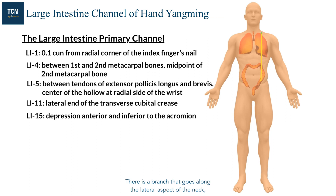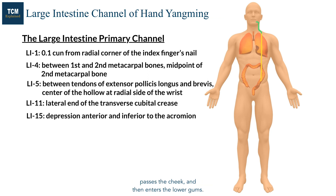There is a branch that goes along the lateral aspect of the neck, passes the cheek, and then enters the lower gums. The channel passes ST4, curves around the upper lip, passes GV26, crossing to the other side of the face.